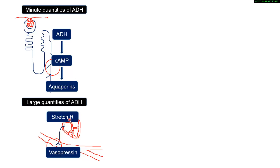When blood volume falls — for example, due to excessive bleeding — less blood returns to the right atrium. The reduced volume means the stretch receptors are not stretched and therefore not stimulated. Without stimulation, the inhibitory signal to the hypothalamus is removed, allowing the hypothalamus to synthesize ADH.